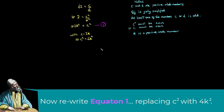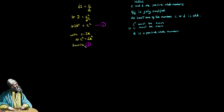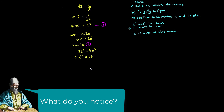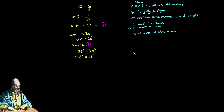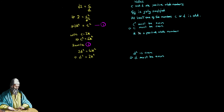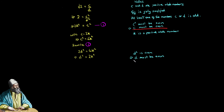Oh, I see. C squared equals 2D squared and C squared equals 4K squared. Therefore, 2D squared must equal 4K squared. That means D squared must be an even number, so D must be even too.